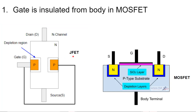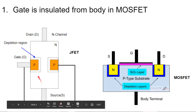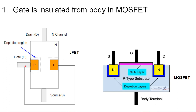In case of N-channel JFET, we dope two P-type regions inside the body of N-type material and connect these two P regions with a common terminal known as the gate. This gate terminal is not insulated or isolated from the body of the JFET. This means if we apply a positive terminal at the gate, the depletion region or potential barrier will be forward biased, which is undesirable. Instead, we use this PN junction in reverse bias mode to control the flow of current through the channel between drain and source.